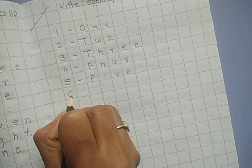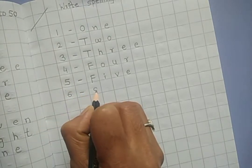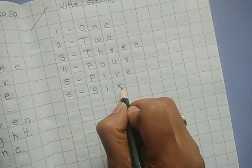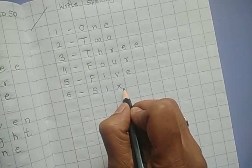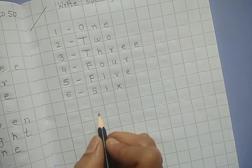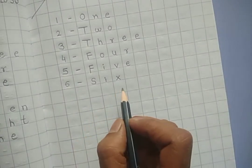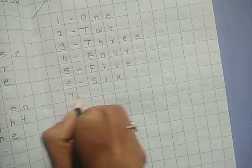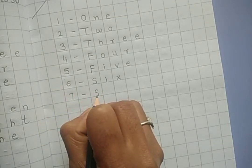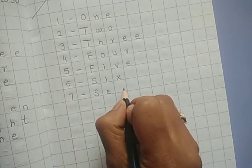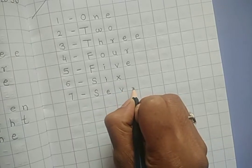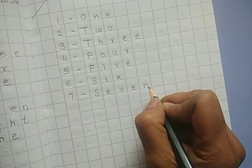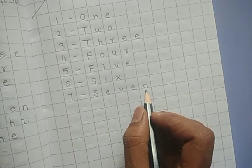Number 6, capital S, small I, small X, S-I-X, six. Number 7, capital S, small E, small V, small E, small N, S-E-V-E-N, number 7.